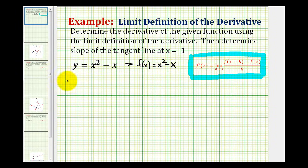So the derivative of our function is going to be equal to the limit as h approaches zero of this difference quotient. Our numerator is going to be f of x plus h, which means we're going to take our function and replace each x with x plus h. So we'll have x plus h squared minus x plus h.